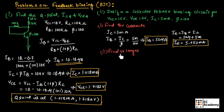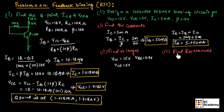Next, let us find the voltages. VCC is given as 15 volts. We know VBE is 0.7 volts, and they have given VCE equal to 5 volts.